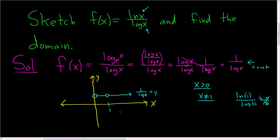So that's the graph, and from the graph we can get the domain. It would be 0 to 1, union 1 to infinity. Sneaky, sneaky problem. I hope that made sense.